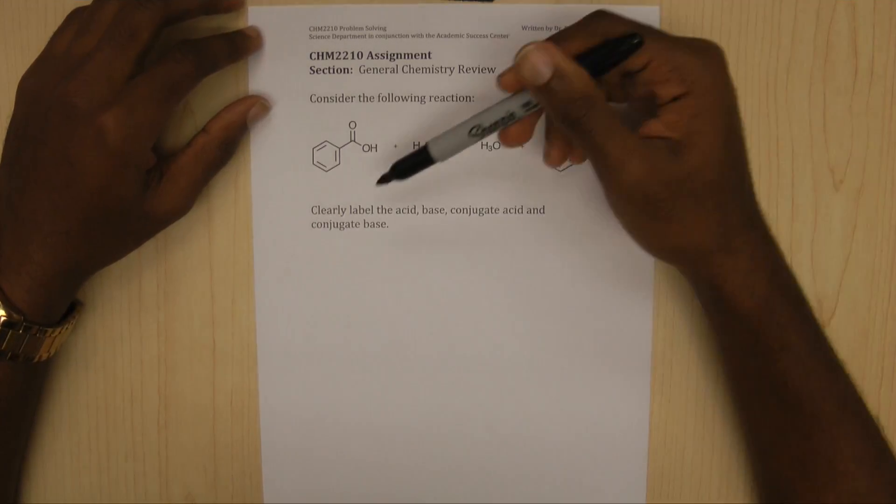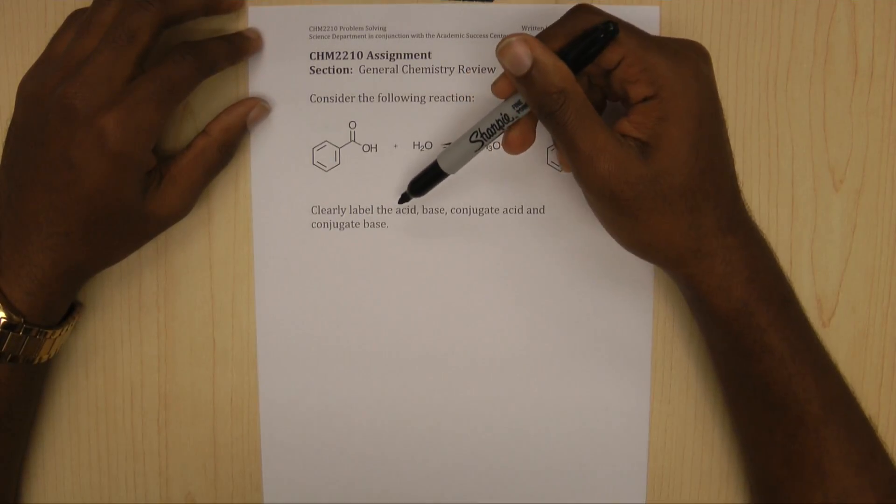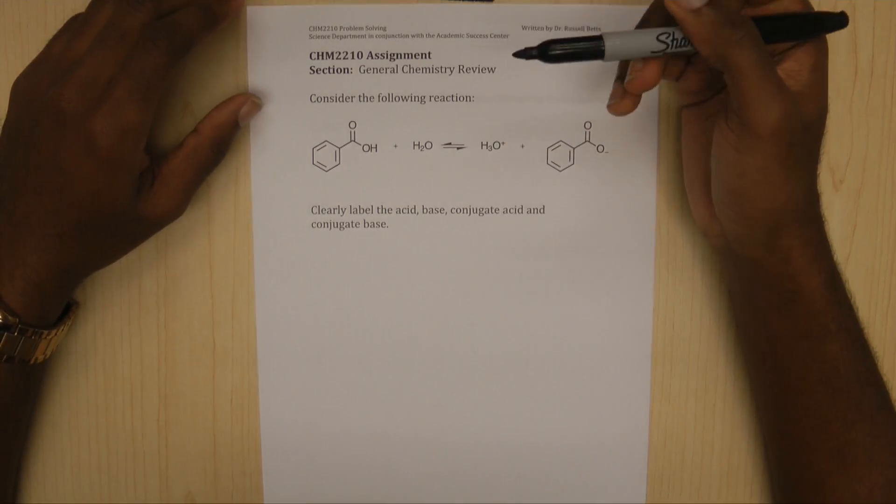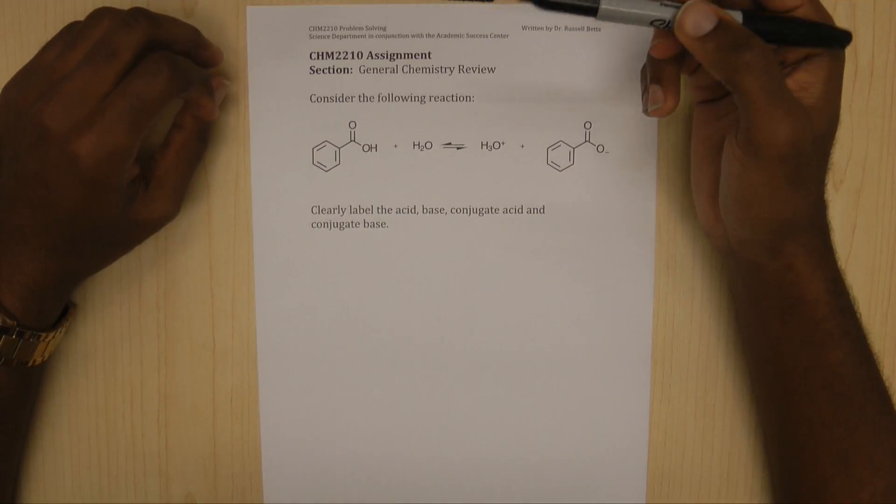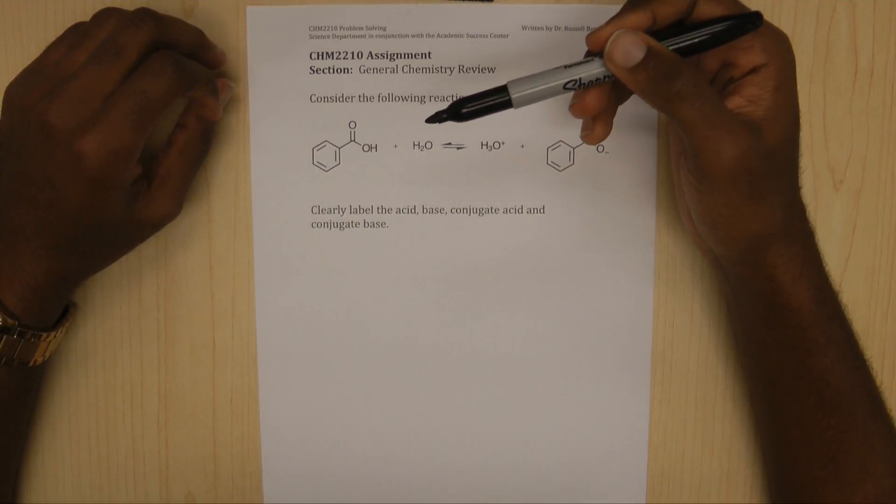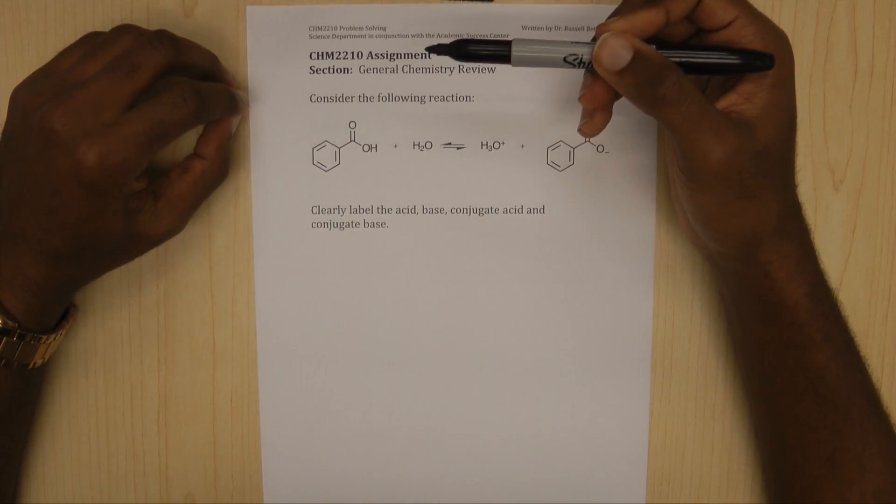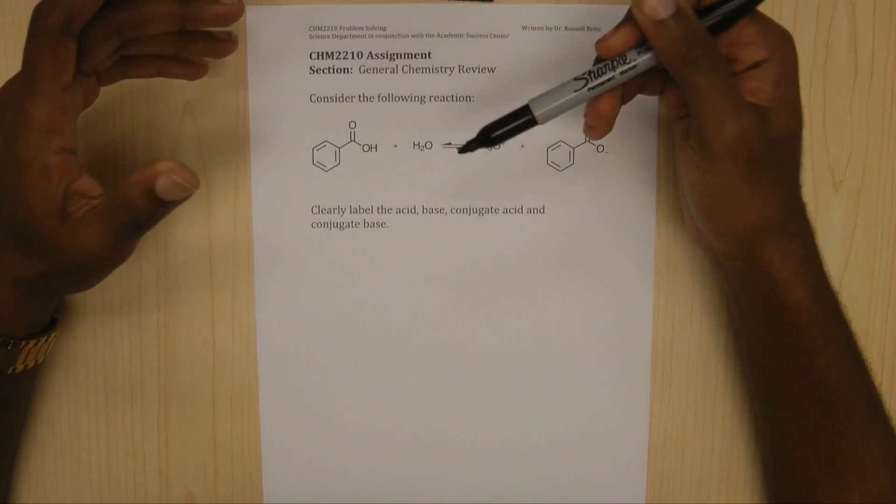Now, the question is, clearly label the acid base, conjugate acid, and conjugate base. Now, if we go back to our Bronsted-Lowry definition, an acid is anything that donates its proton, and a base is anything that accepts a proton.